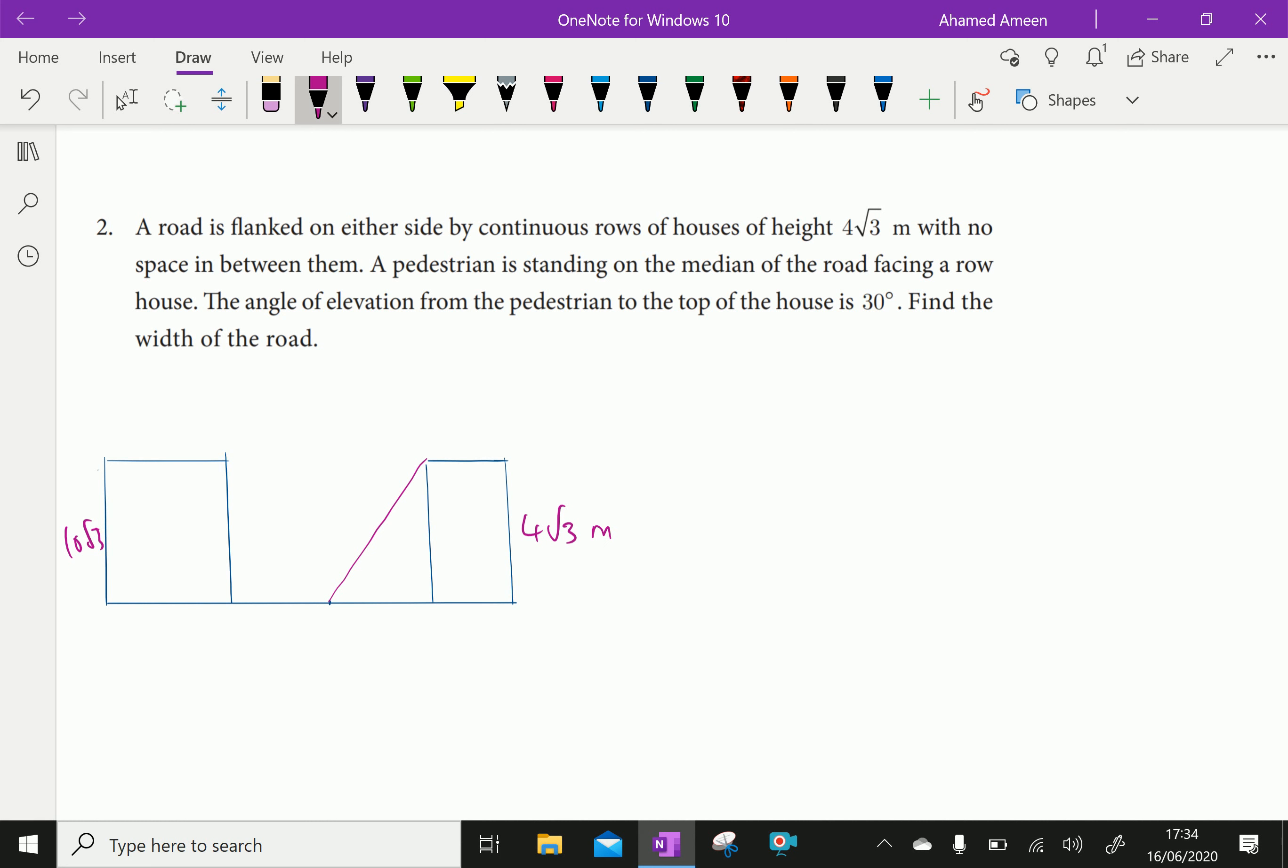Then, with no space in between them, a pedestrian is standing on the median of the road facing a row of houses. The angle of elevation from the pedestrian to the top of the house is 30 degree. Find the width of the road.